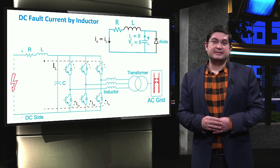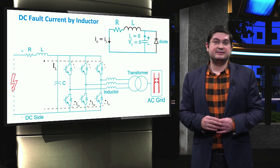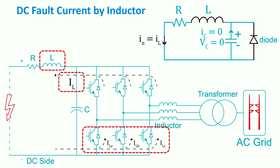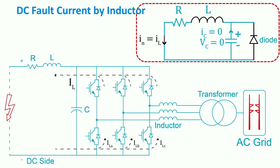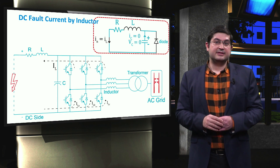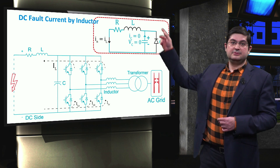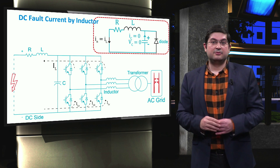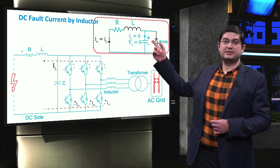The third contributor to the DC fault current is the discharge of the cable inductance. During the fault, the inductor releases its stored electrical energy, where the inductor's current will circulate through the freewheeling diodes of the switches. The equivalent circuit shows the current of the inductance passing through the diode. Note that for this fault current component of the cables' inductor, we do not consider the initial voltage of the capacitor.